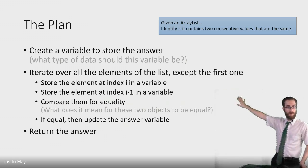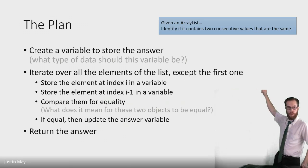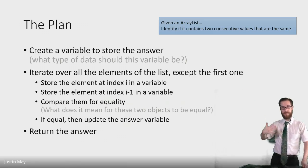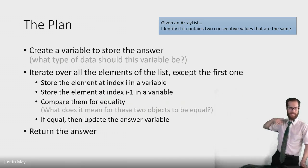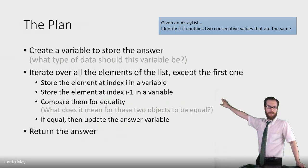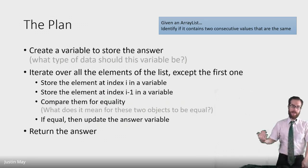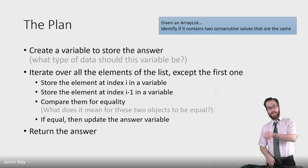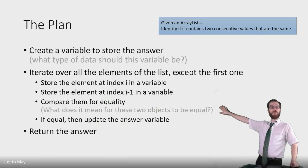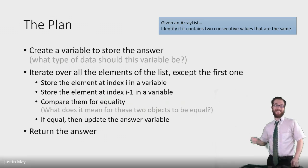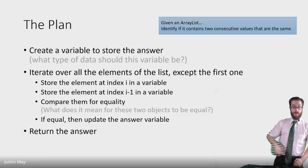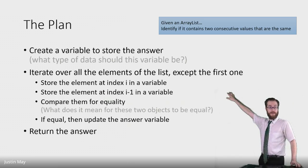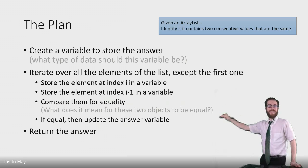We're going to iterate over all of the elements of the list except the first one. That's important because we're looking for consecutive values — we're going to skip the first one. We will store the element at index i in a variable. That's the first thing you do in any for loop: get the value at index i and store it in a variable. Then we will store the element at index i minus one in a variable — that's why we're skipping the first one in the loop. So we take the value at index i and the value at index i minus one.